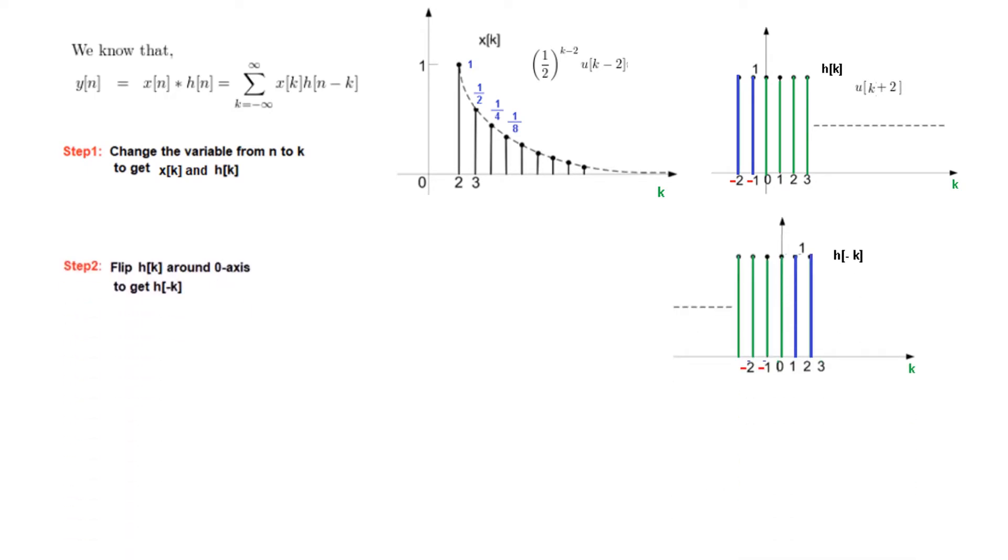And the next step is flip h[k] around 0 axis. So one of these two we have to flip, but this is easier looking, so we flip this one. Just to distinguish, I have marked them in blue color. So when we flip this around this 0 axis, this one goes on the right hand side and the others, the greens on the left hand side. So this is the second step. We have flipped this and the name now changes to h[-k] instead of h[k].